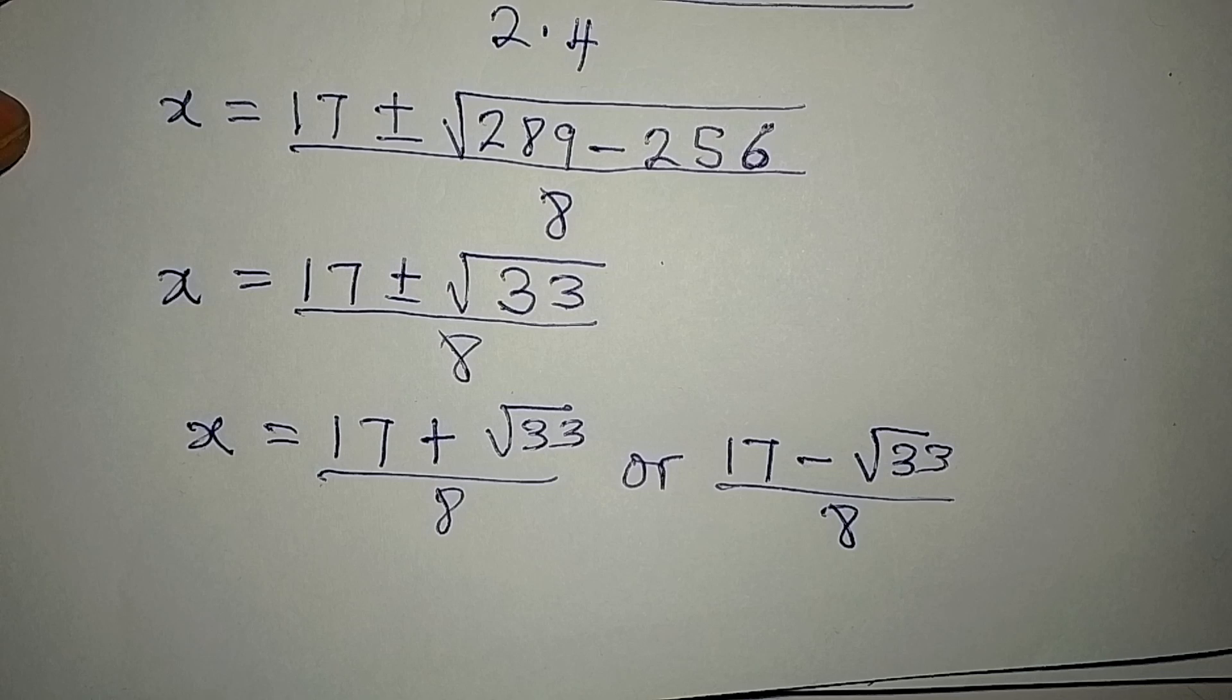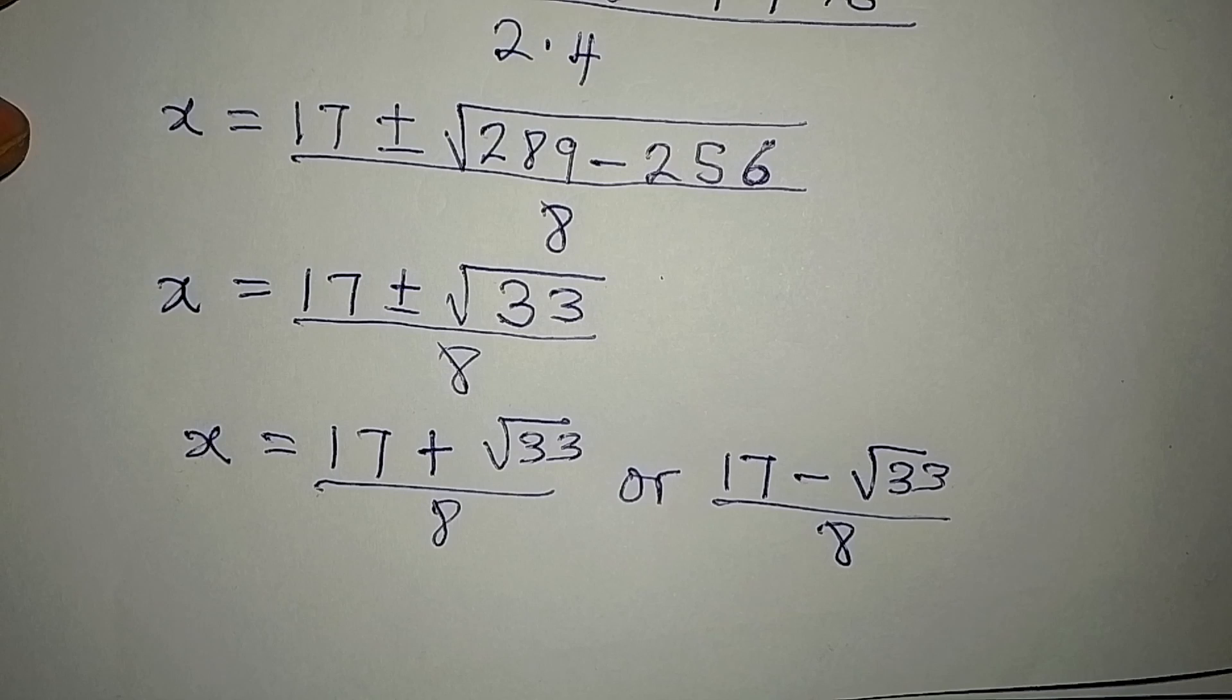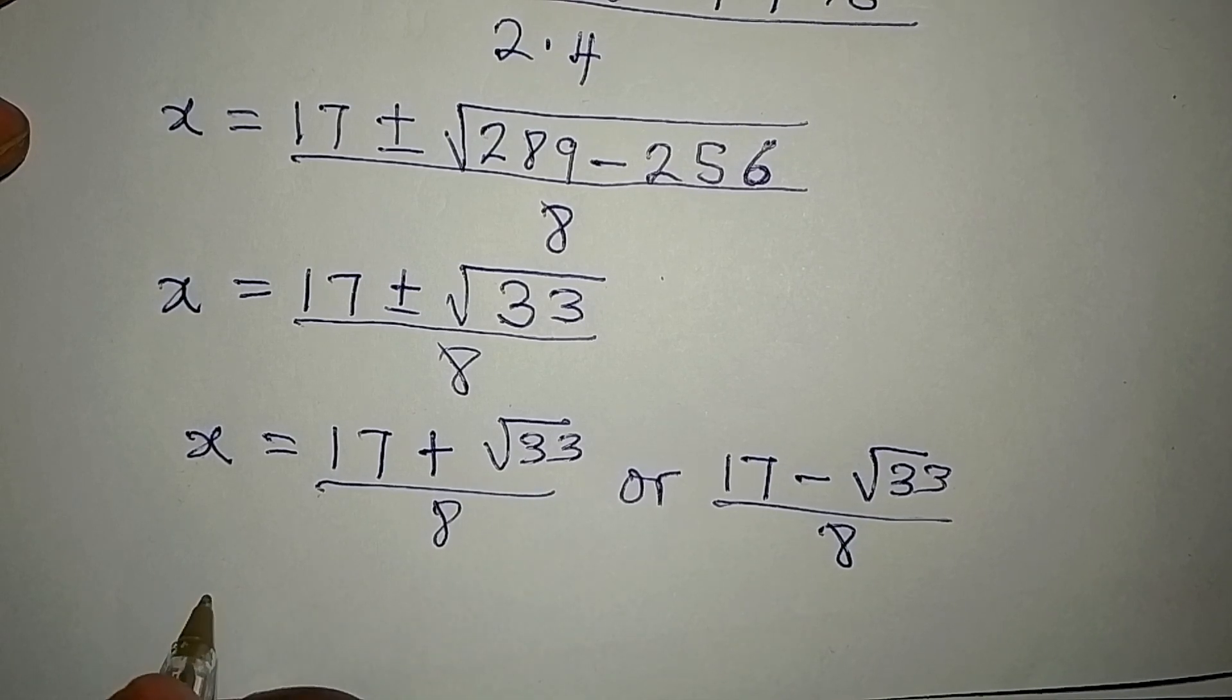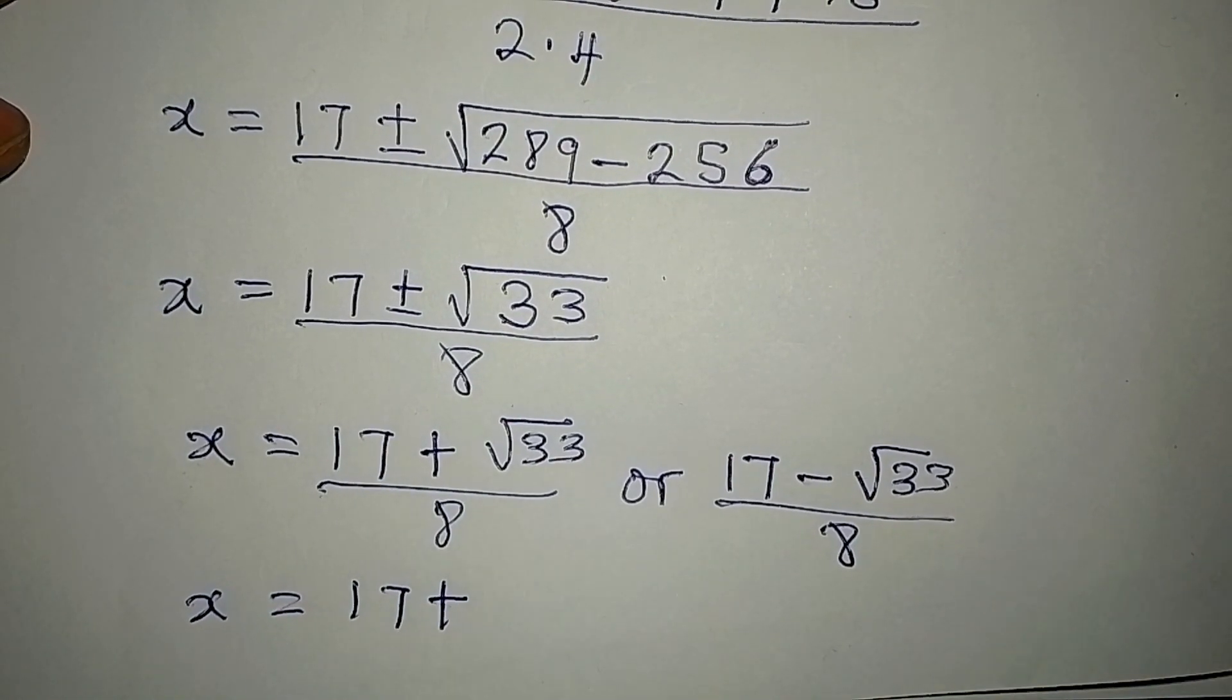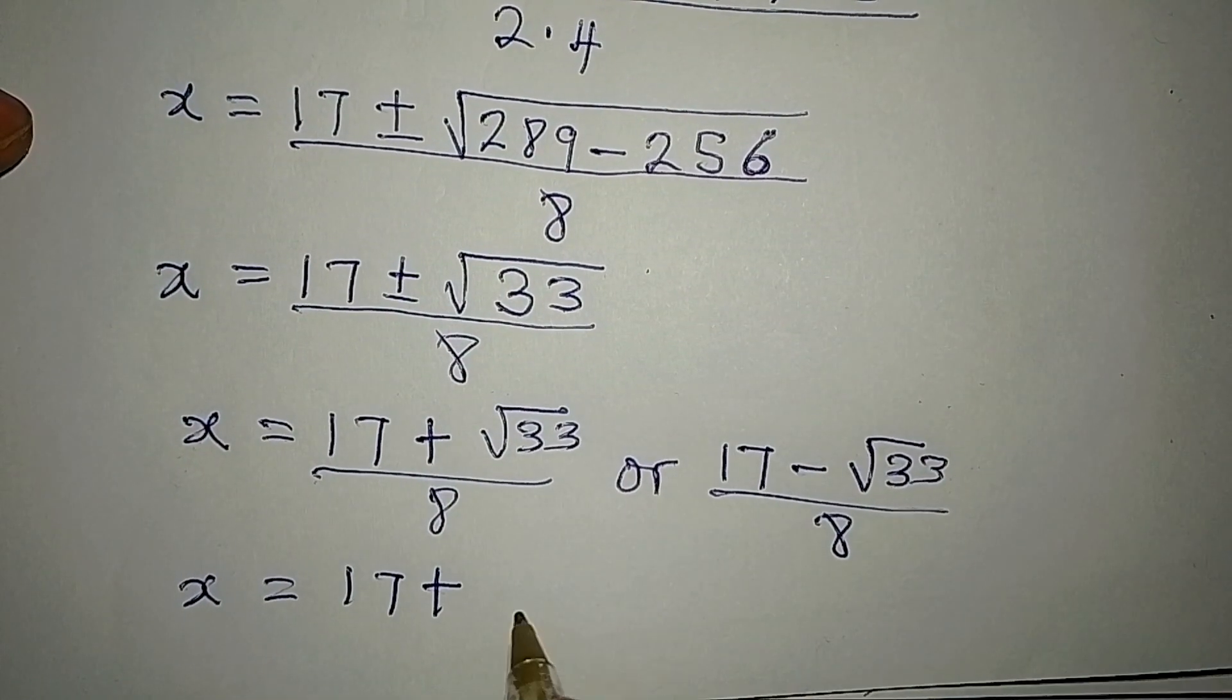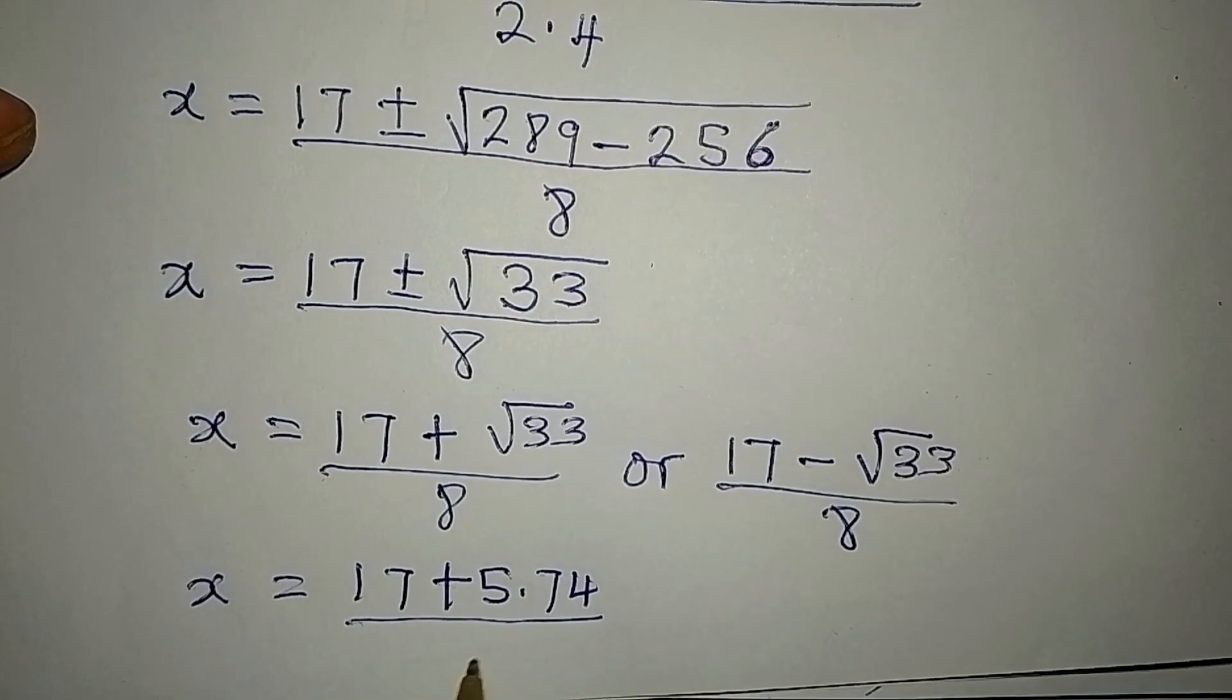And by the way, you can decide to get your answer in decimal form. To do that, what we'll do is to find the square root of 33. So, x will be equal to 17 plus square root of 33, approximately that will be 5.74, approximately. Then we divide this by 8.